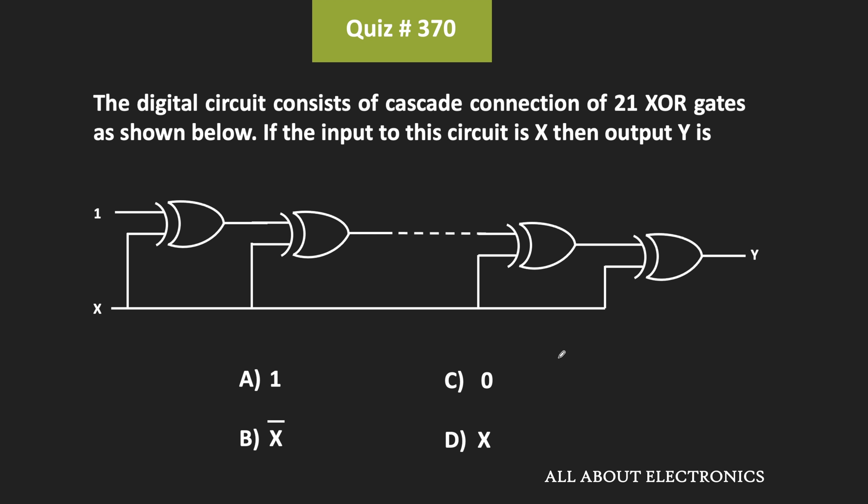Hey friends, welcome to the YouTube channel All About Electronics. In this question, we have been given a digital circuit in which 21 XOR gates are connected in a cascade connection.